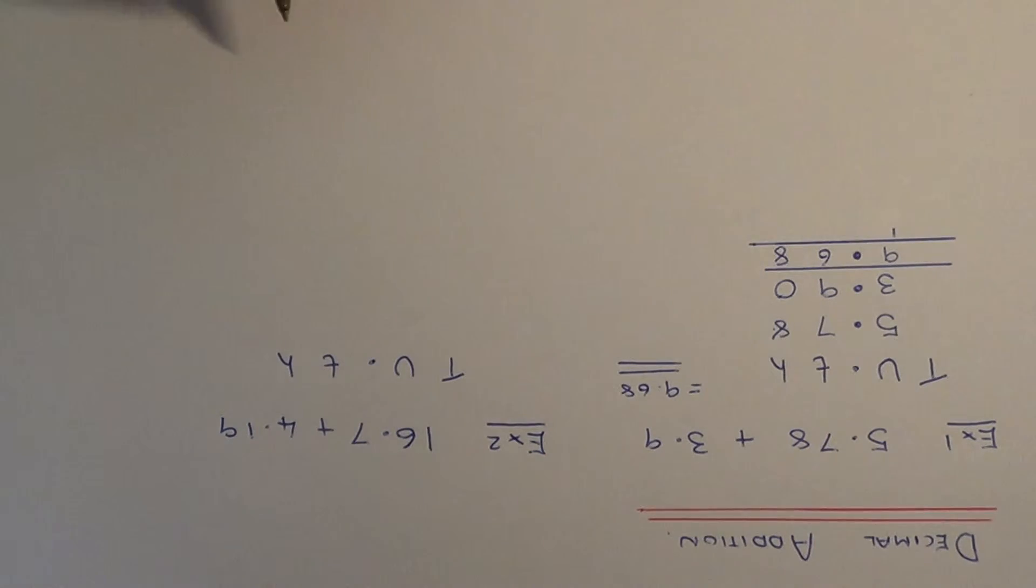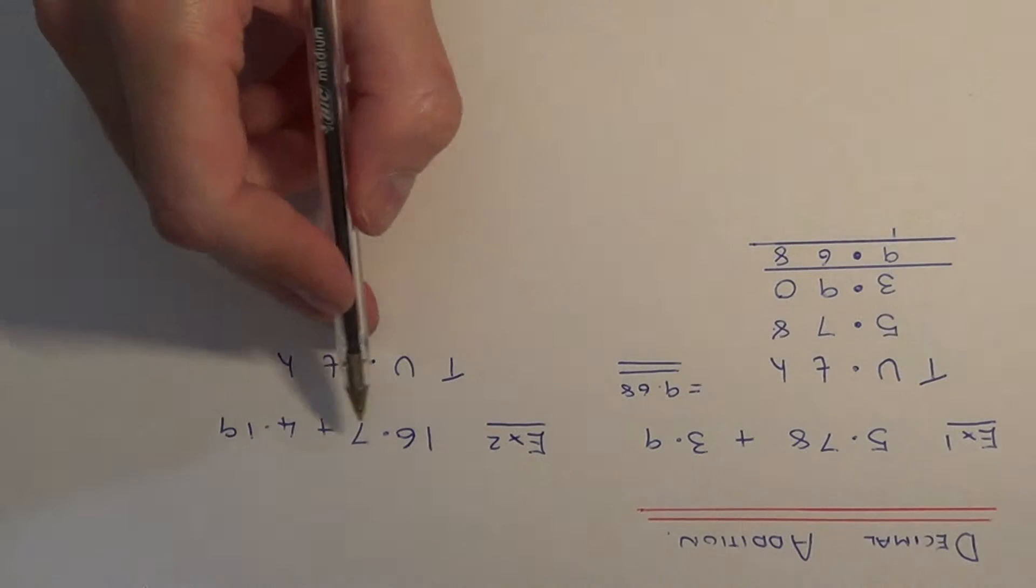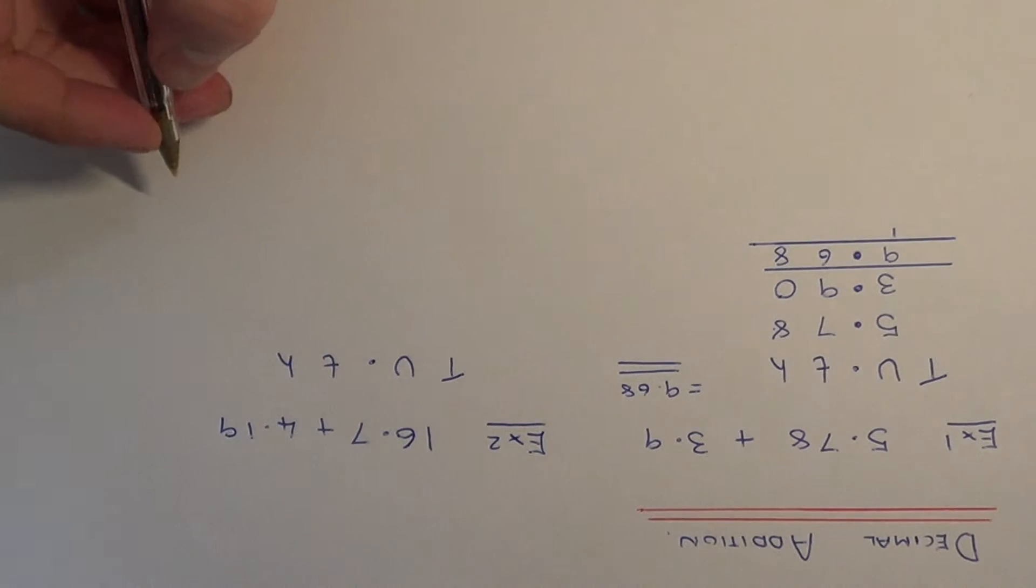Let's do one more example. With example 2, we've got 16.7 add 4.19.